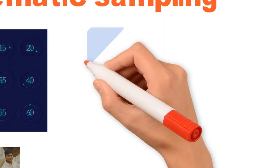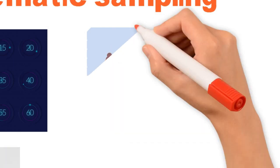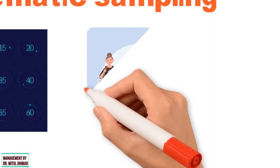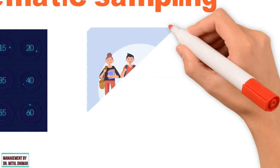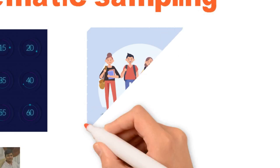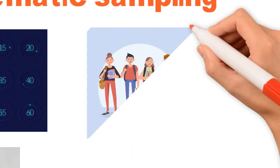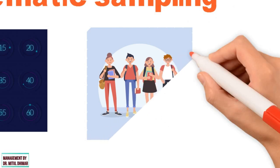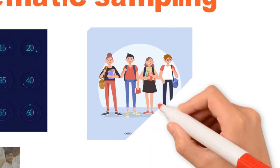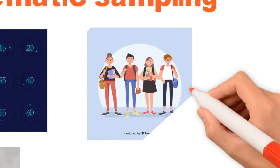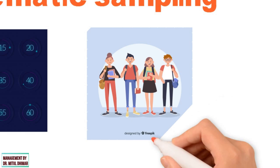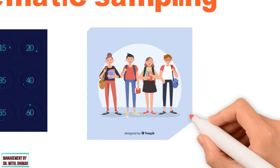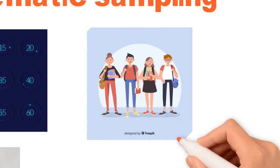For example, if a group of students were being sampled to gain their opinion on college facilities, the administration department makes a central list of all students and arranges them such that the sex of students alternates between male and female. Choosing a student at an even interval, for example every 20th student, would result in a sample of all males or all females.